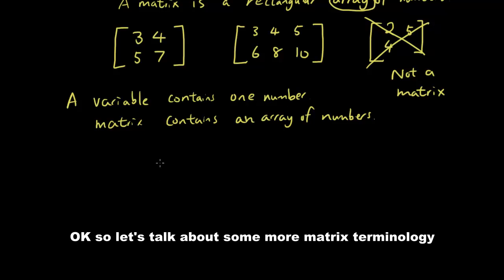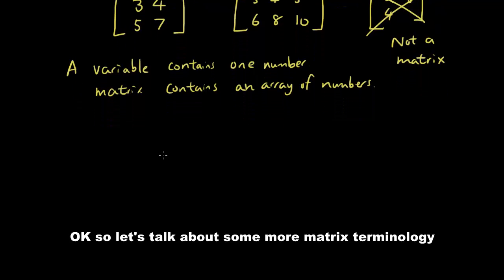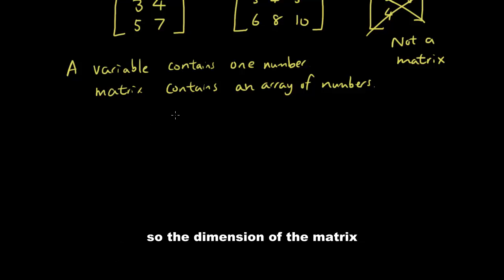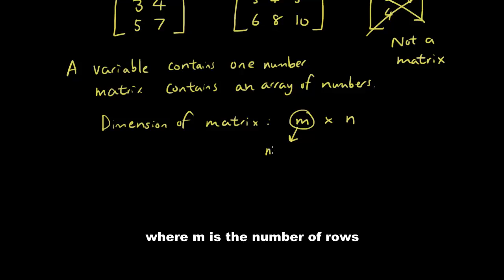Okay, so let's talk about some more matrix terminology. And the first thing we'll do is talk about the dimension of the matrix. So the dimension of the matrix is given by m times n, where m is the number of rows and n is the number of columns.